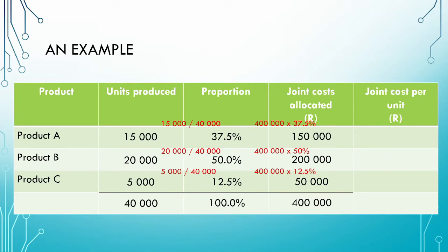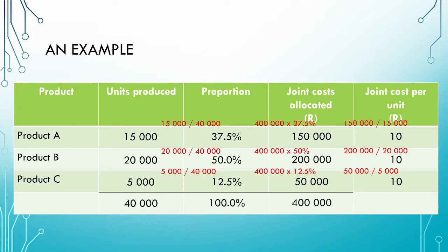We now have our joint cost allocation for each product. To calculate the joint cost per unit, we take the allocated joint cost and divide it by the number of units produced. For product A, R150,000 divided by 15,000 units gives R10 per unit. Doing the same for products B and C, each product's joint cost per unit is also R10. This is in line with the underlying assumption that each product receives similar benefits from the joint process.